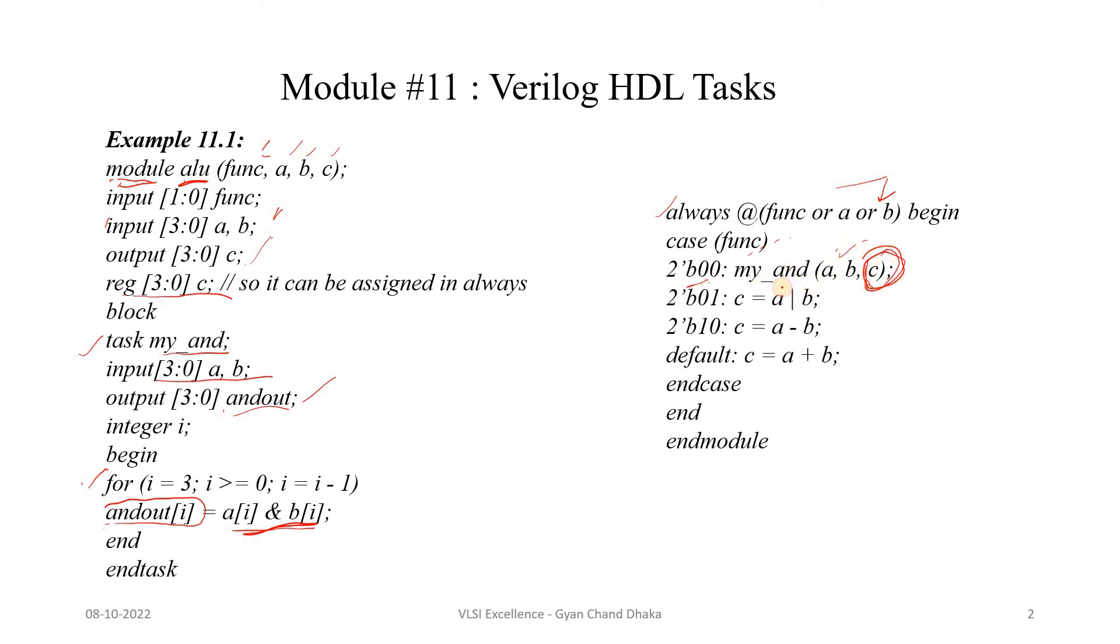Here a and b are the input to the task and c is the output. So basically by calling this task, we are assigning the AND operation of a and b to c. Now if the func value is 01, our c will be a OR b. If the func value is 10, the c will be assigned a minus b, and by default c will be a plus b.